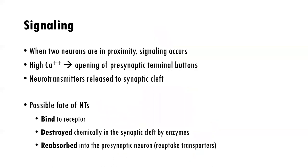Once released into the cleft, some neurotransmitters will bind to receptors on the postsynaptic neuron. To recap: when two neurons are in proximity, signaling occurs based on electrical charge — positive and negative. Something like calcium, which is positively charged, opens the presynaptic terminal buttons and neurotransmitters are released into the synaptic cleft. The cell needs opposing charges to attract together, which leads to the action potential and neurotransmission continuing.